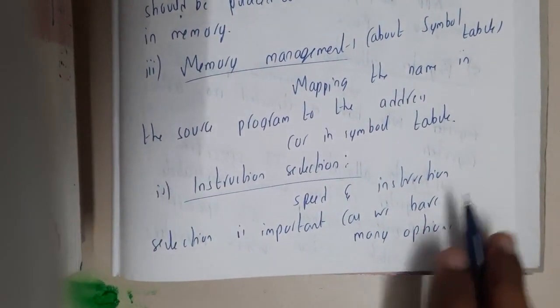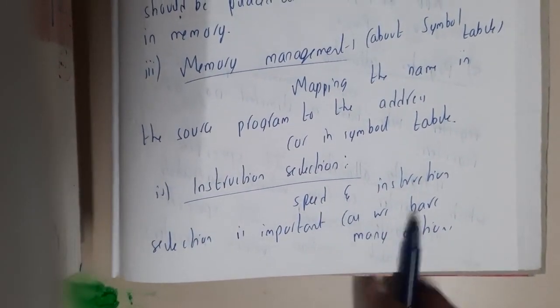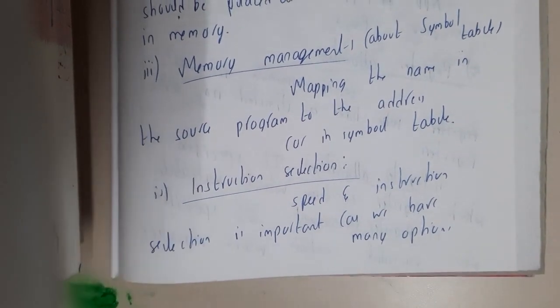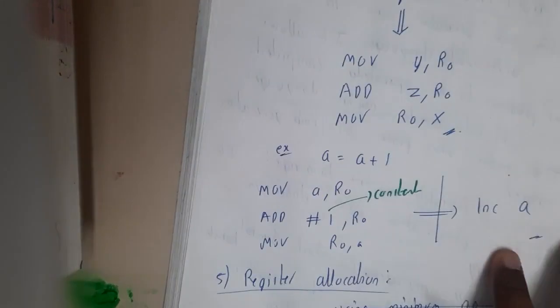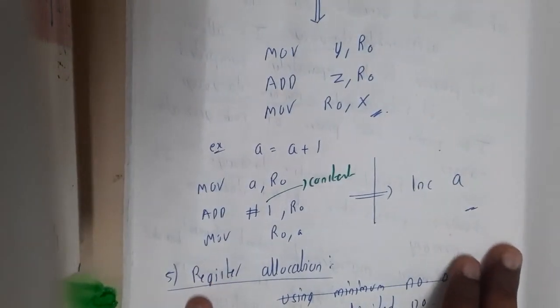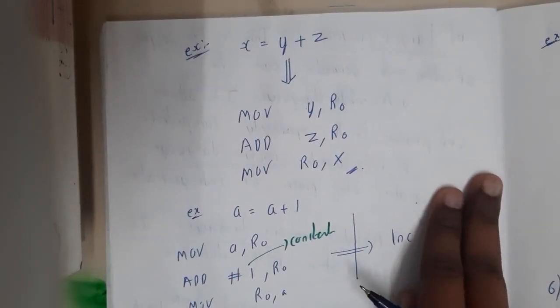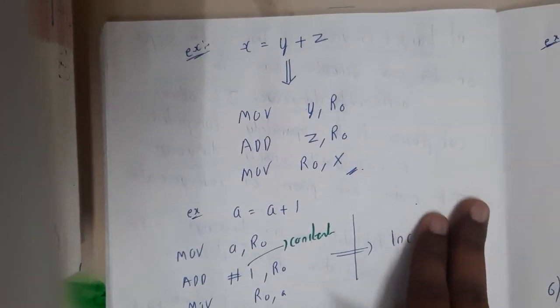Instruction selection - speed and instruction selection is more important as we have many options. Here we are having multiple options of three address codes and all those things. The selection of code is also important.